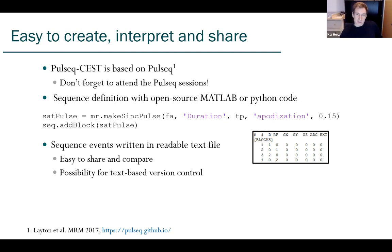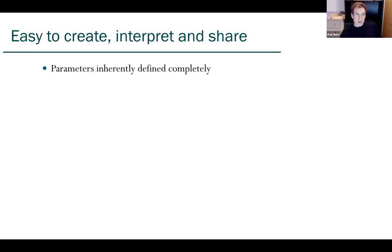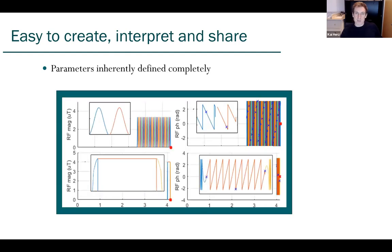You can see here just the caption of such a Pulseq file. You have RF events, gradients, ADC, et cetera. This is easy to share and compare because you can open it with a simple text editor. The nice thing is, since it's really text based, we even have the possibility for version control protocols. And the parameters are inherently completely defined since the shape is written in the text file. When we plot such a Pulseq file, you can see the shape here. This is really defined. You cannot change it on the scanner later because it's written in the text file.